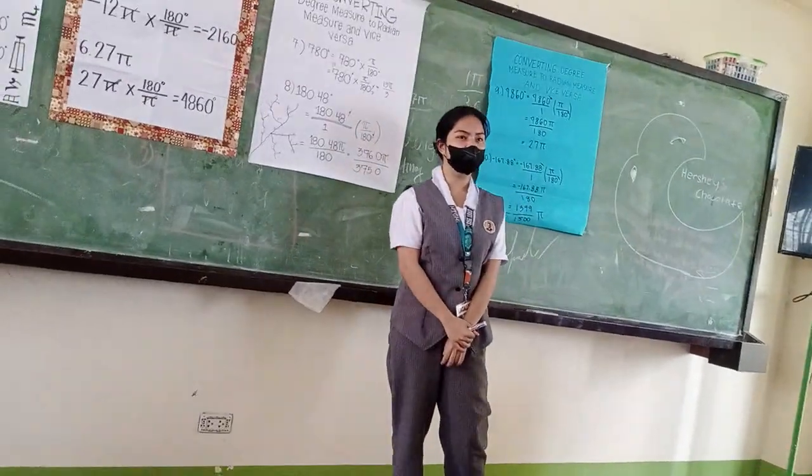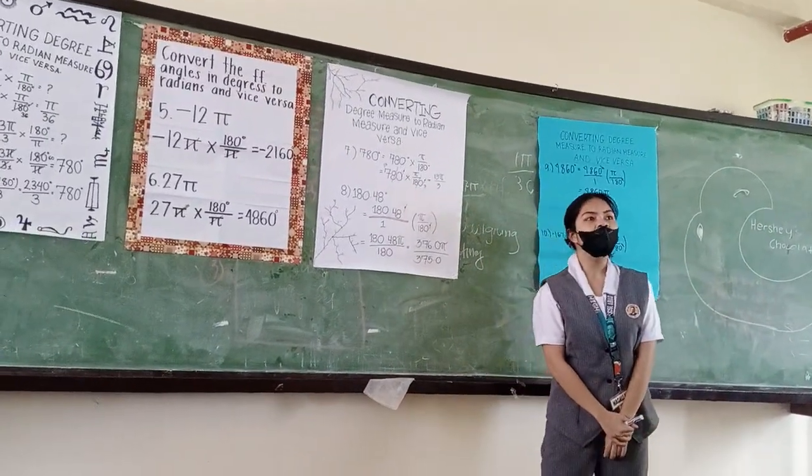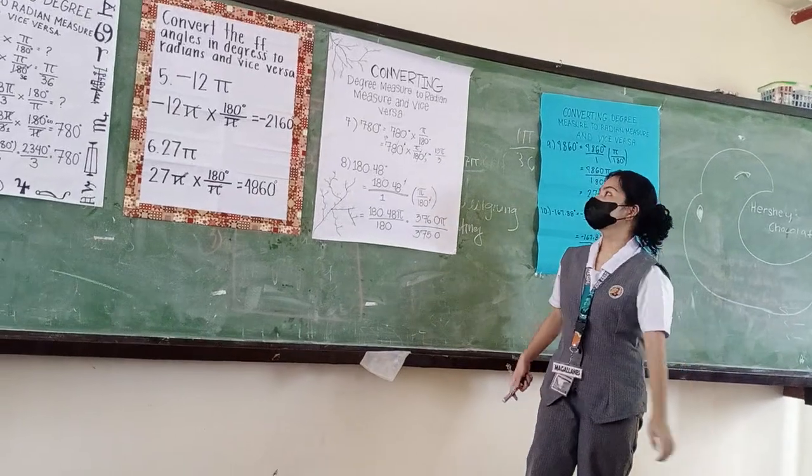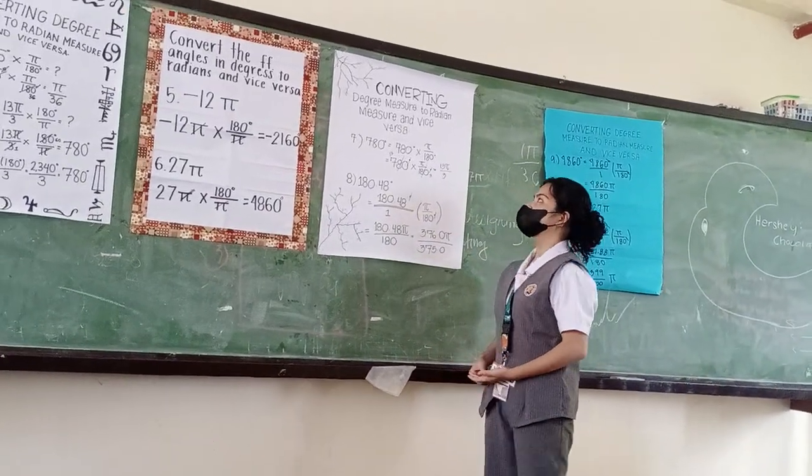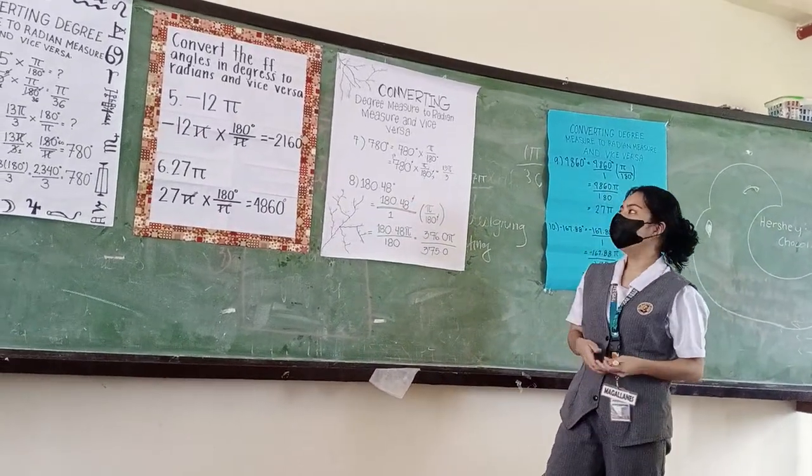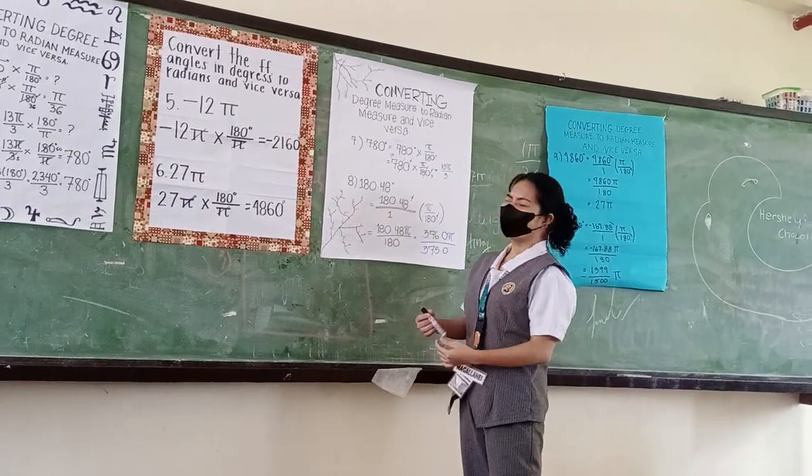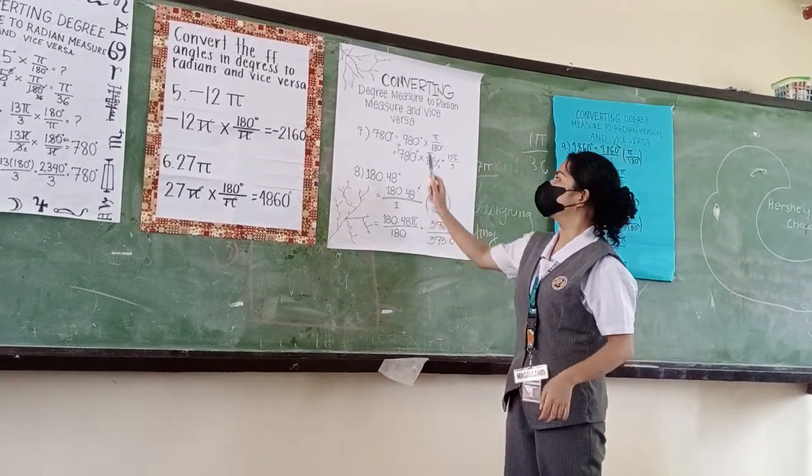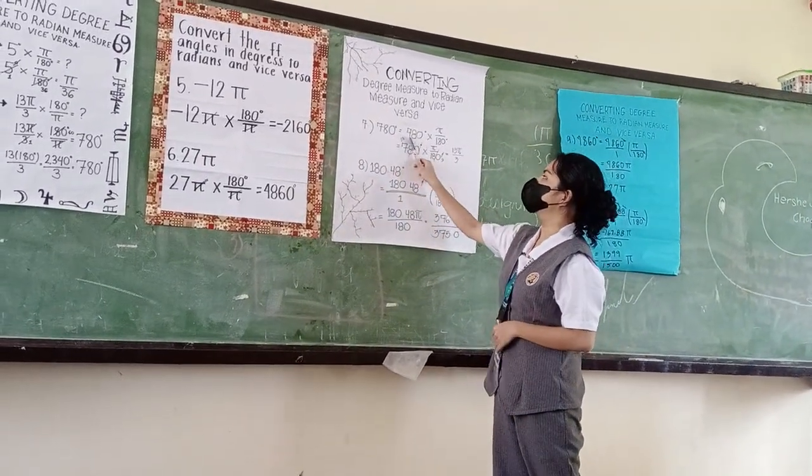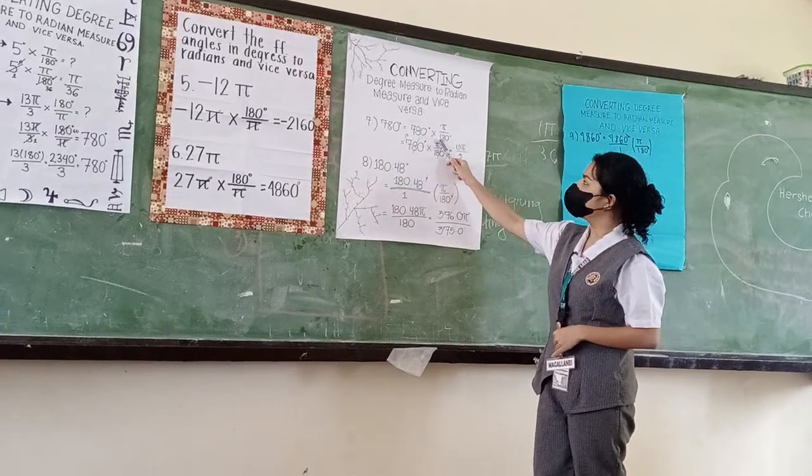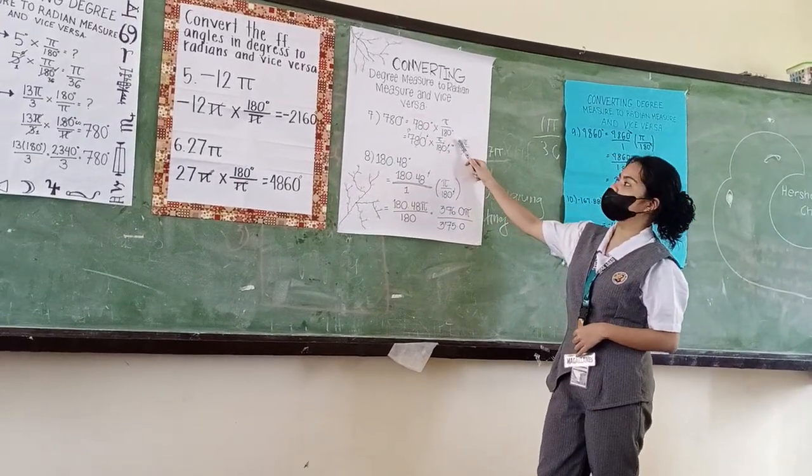I am here to work through some problems. Now, let's talk about number 7. 780 degrees equal to 780 times π over 180.